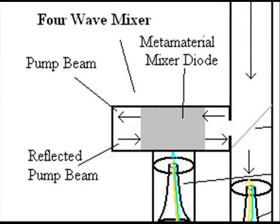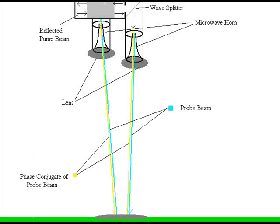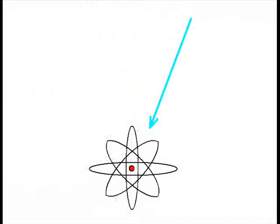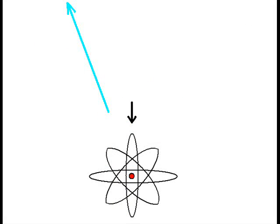While inside the metamaterial, the second beam, known as the pump beam, travels faster than the speed of light due to the structural and electromagnetic properties of the metamaterial. It bounces around inside this metamaterial before being sent to the ground to bounce off the same atom that the original source beam just bounced off of.